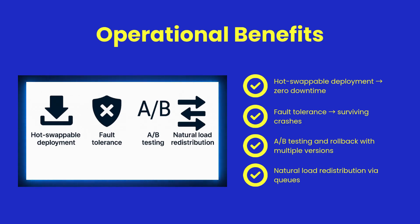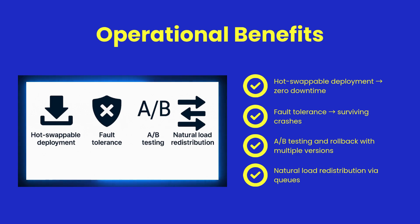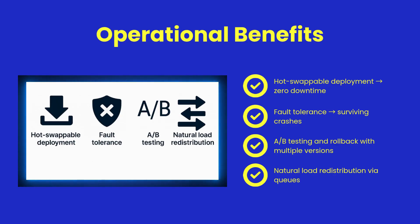Operationally, ShearPower FastCGI is robust. You can hot-swap code with no downtime, recover instantly from crashes as other handlers pick up the load, and even run multiple versions for A/B testing or rollback. The queue design gives you enterprise-grade resilience.